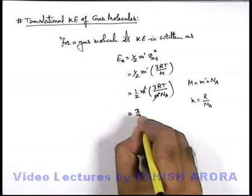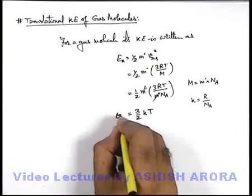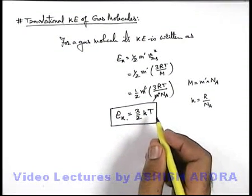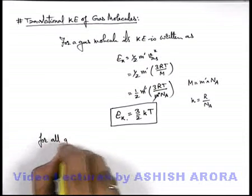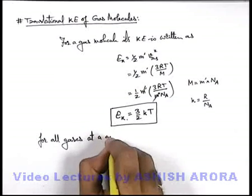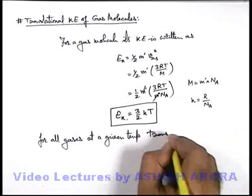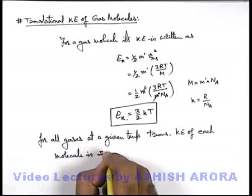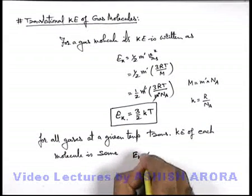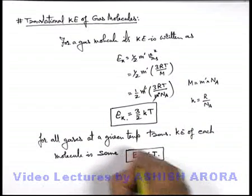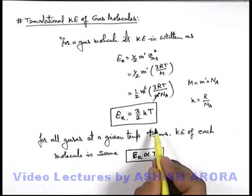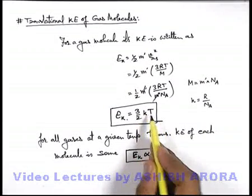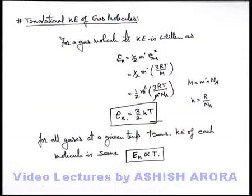So replacing it, the result is three by two kT. This is the total translational kinetic energy of a gas molecule. No matter what type of gas, it won't make any difference. So for all gases at a given temperature, the translational kinetic energy of each molecule is the same and is given by three by two kT, where k is the Boltzmann constant and T is the absolute temperature of the gas. This translational kinetic energy is directly proportional to the absolute temperature of the gas.